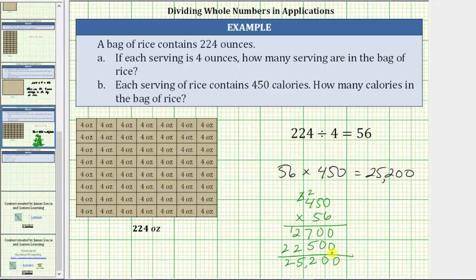Which means the bag of rice that has 56 four-ounce servings with 450 calories per serving has a total of 25,200 calories. As a complete sentence, there are 25,200 calories in the bag of rice.